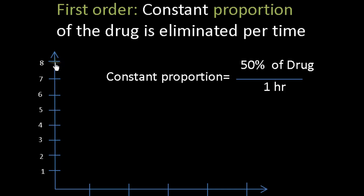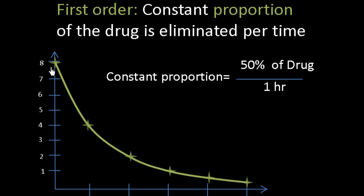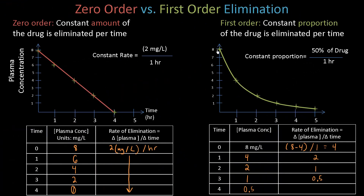When we plot these values, starting at 8, then 4, 2, 1, 0.5, 0.25 — this is clearly not a linear graph. This is an exponential graph. Pay attention to the scale on the y-axis: this is a linear scale, but oftentimes when we graph first order elimination we use a logarithmic scale instead. On the next slide we'll look at half-life and logarithmic scales, because using a logarithmic scale with first order elimination helps us approximate the half-life.